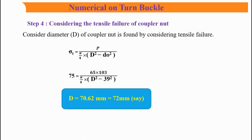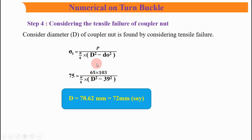Step 4 is considering the tensile failure of the coupler nut. The diameter D of the coupler nut is found by: σ_t = P / [(π/4) × (D² − d₀²)]. So 75 = (65 × 10³) / [(π/4) × (D² − 39²)]. Solving gives D = 70.62 mm, which we round to 72 mm.